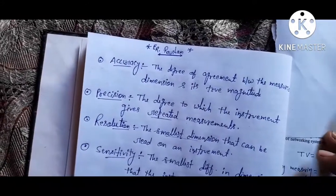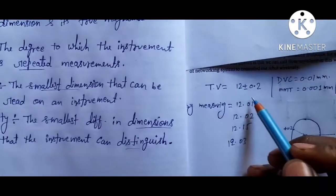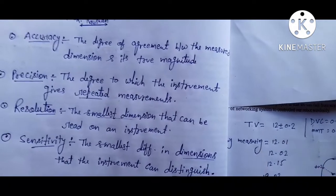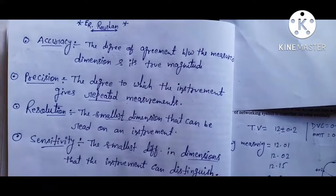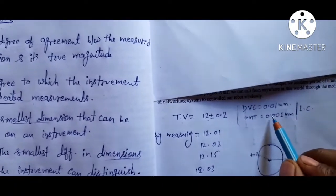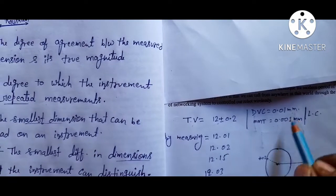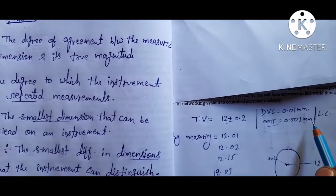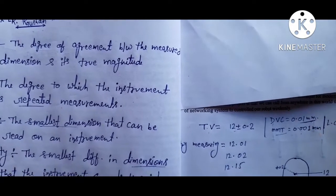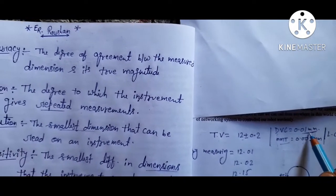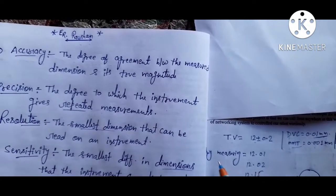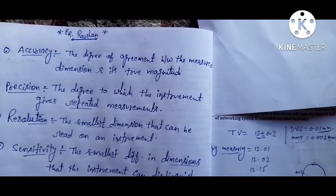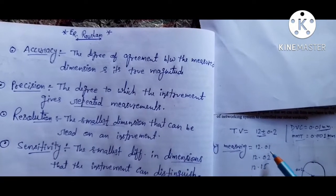Say the true value is 12 ± 0.2 mm. If we want to measure it using a vernier caliper, which has a least count of 0.01 mm, or a micrometer, which has a least count of 0.001 mm — we check by vernier caliper with least count 0.01 mm. This true value is our true magnitude.